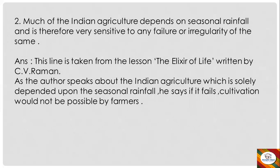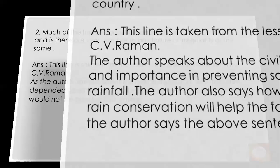The second question is: 'Much of the Indian agriculture depends on seasonal rainfall and is therefore very sensitive to any failure or irregularity of the season.' This line is taken from the lesson The Elixir of Life written by C.B. Raven. As the author speaks about the Indian agriculture, which is solely dependent upon the seasonal rainfall, he says if it fails, cultivation would not be possible by farmers.